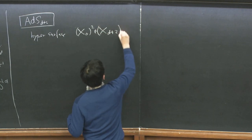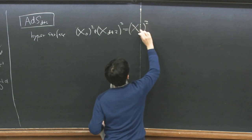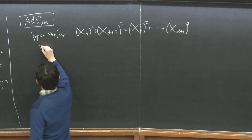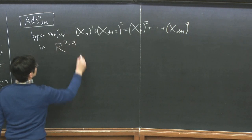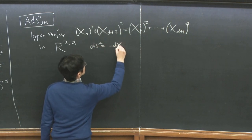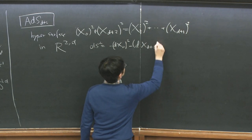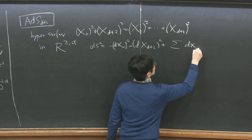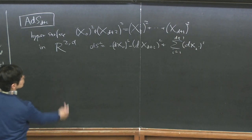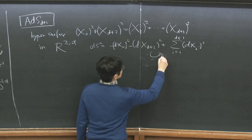In my convention, ADS_{D+2} is defined as a hypersurface in a two-time embedding space R^{2,D+1}. The metric signature has two time-like directions and the rest spatial. This is the definition of anti-de Sitter space, and obviously it has a symmetry SO(2, D+1), which is identified as the conformal symmetry in the D+1 dimensional CFT.